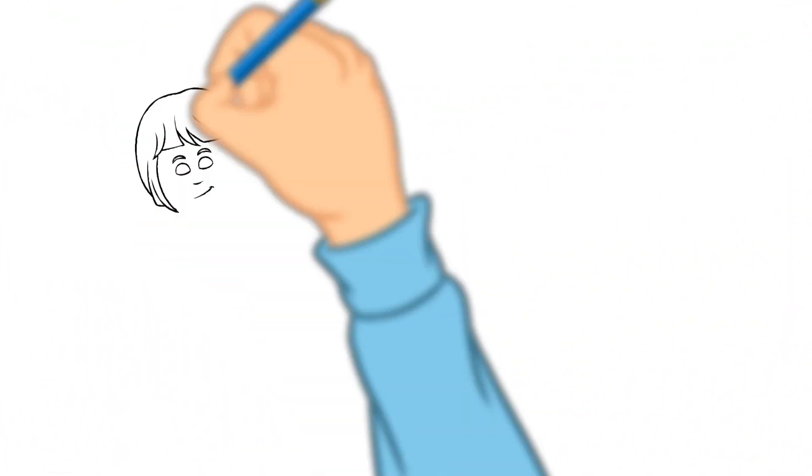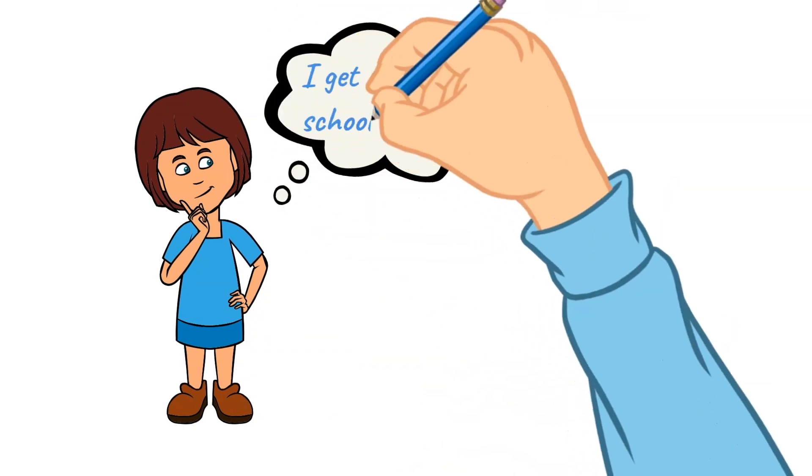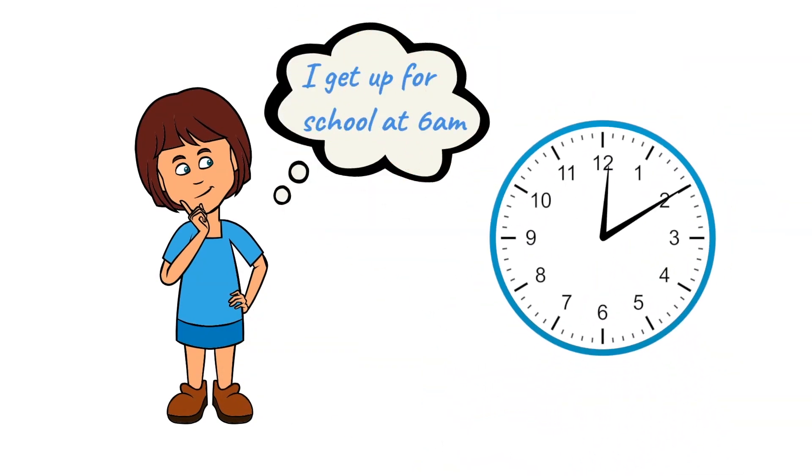Take a moment now to figure out your ideal bedtime. Start with the time you usually get up for school and count backwards 10 or 11 hours from there.